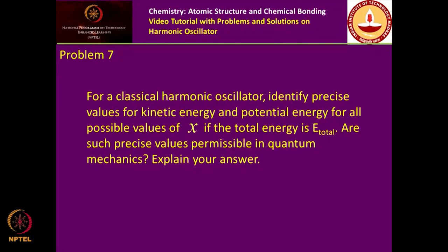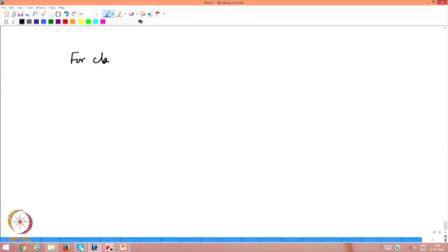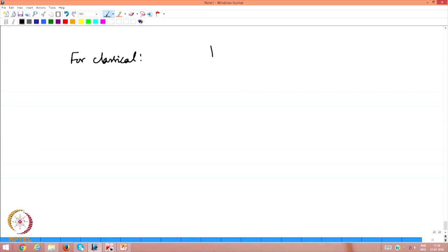Problem 7: for a classical harmonic oscillator, identify precise values for kinetic and potential energy at all possible values of x given total energy E. The question then asks whether such precise values are permissible in quantum mechanics. The answer is no — such precise simultaneous values are not permissible in quantum mechanics.